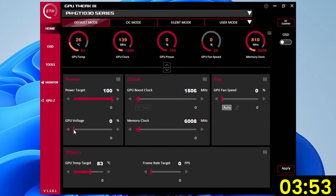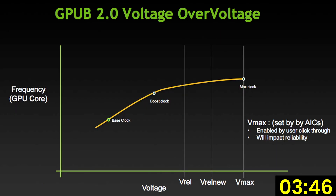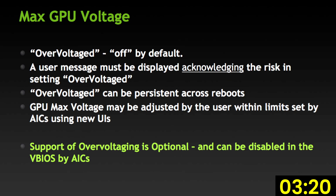Set GPU voltage to 100%. This enables the overvoltage feature present since GPU Boost 2.0. Overvoltage specifically refers to the extended voltage range between the reliability voltage (V-REL) and the maximum voltage (V-Max) as specified by NVIDIA. V-REL is the highest voltage the GPU will safely run at without harming long-term lifespan, while V-Max is the highest voltage NVIDIA will allow, as it may harm lifespan. This extended voltage range can be enabled or disabled by NVIDIA board partners.